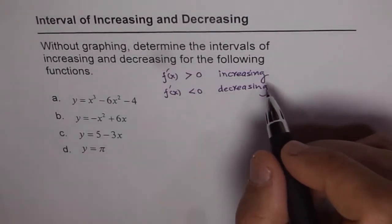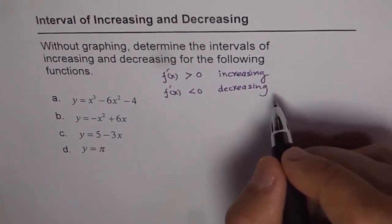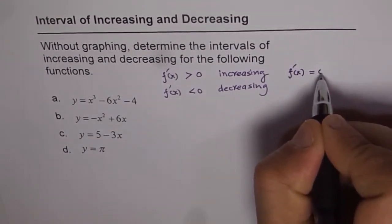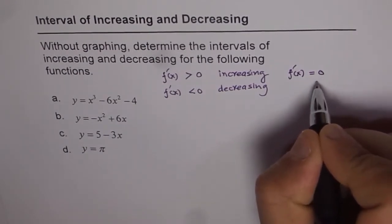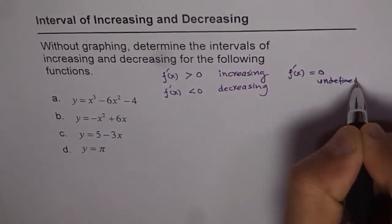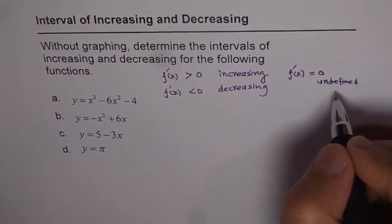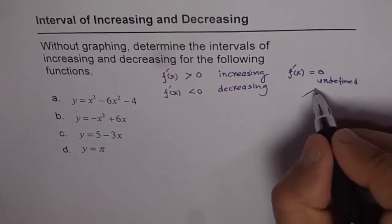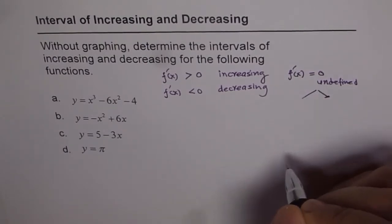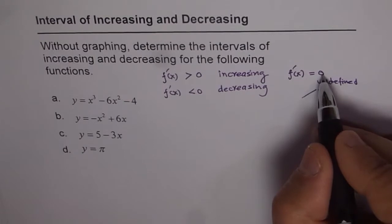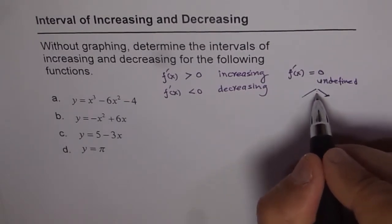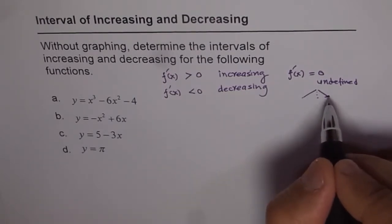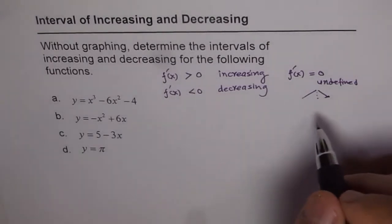To find out the intervals where the function is increasing or decreasing, we basically try to find out which are the points at which f'(x) is equal to 0 or undefined. These demarcate the intervals of increasing and decreasing. So if a function is increasing and then decreasing, at the point where it turns, the derivative will be 0 or undefined. We are trying to find this point, and once we find it, we test on either side whether f'(x) is positive or negative.